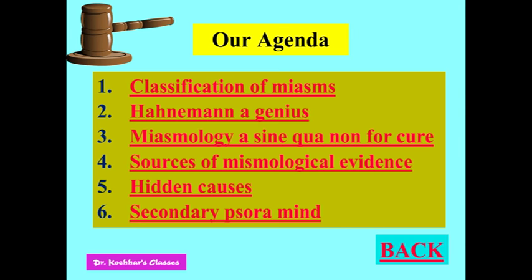Basically, if we look at the concept of miasms, we have to make one thing very clear in our mind: Hahnemann started his theory of similia, but insofar as the cause is concerned, Hahnemann took special interest in causation. In Aphorism 5, from the 4th edition onwards, he introduced the word miasms — the exciting cause and fundamental causes — and from then onwards this theory of miasms became more heightened after he published his work on chronic diseases.